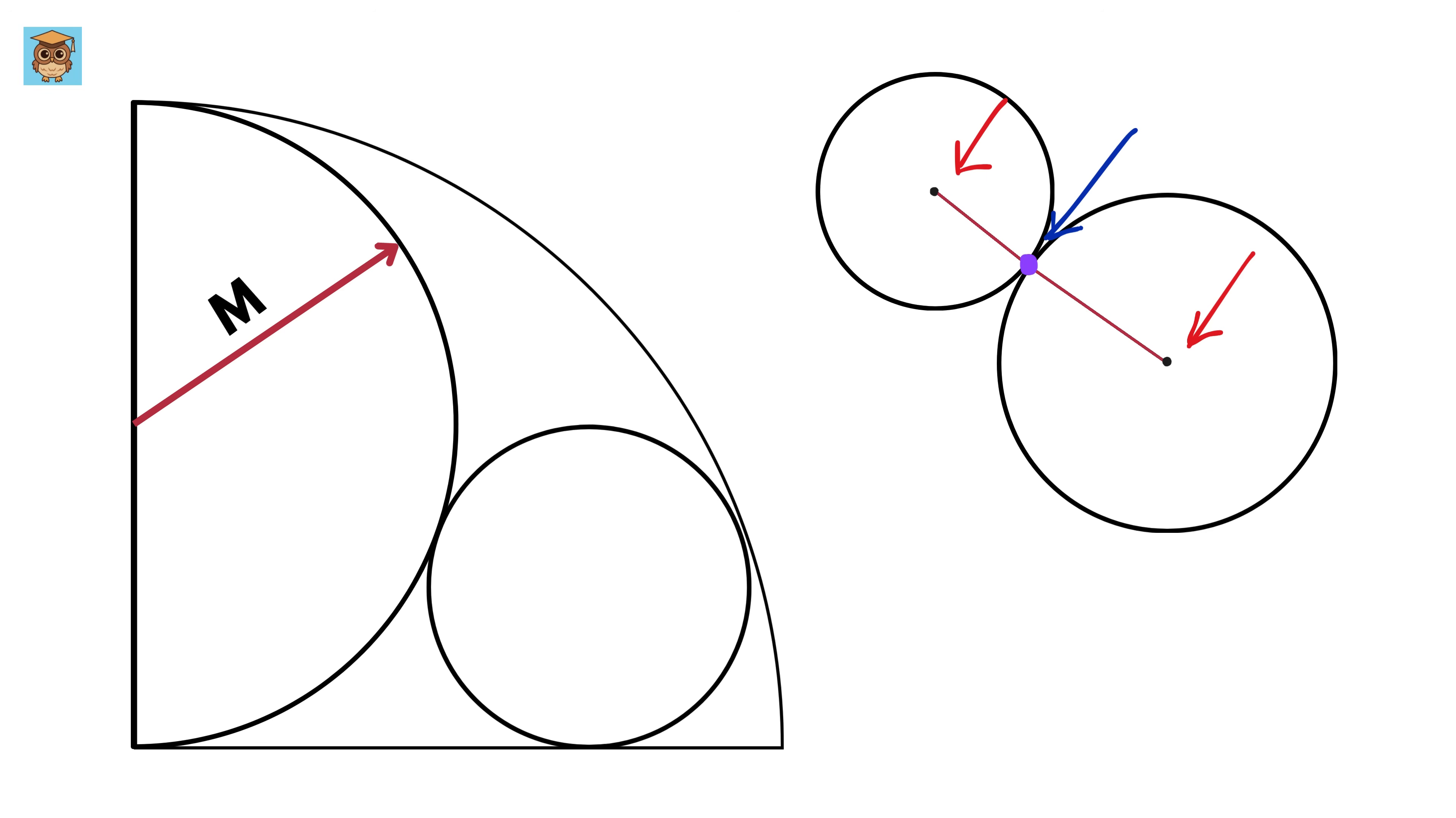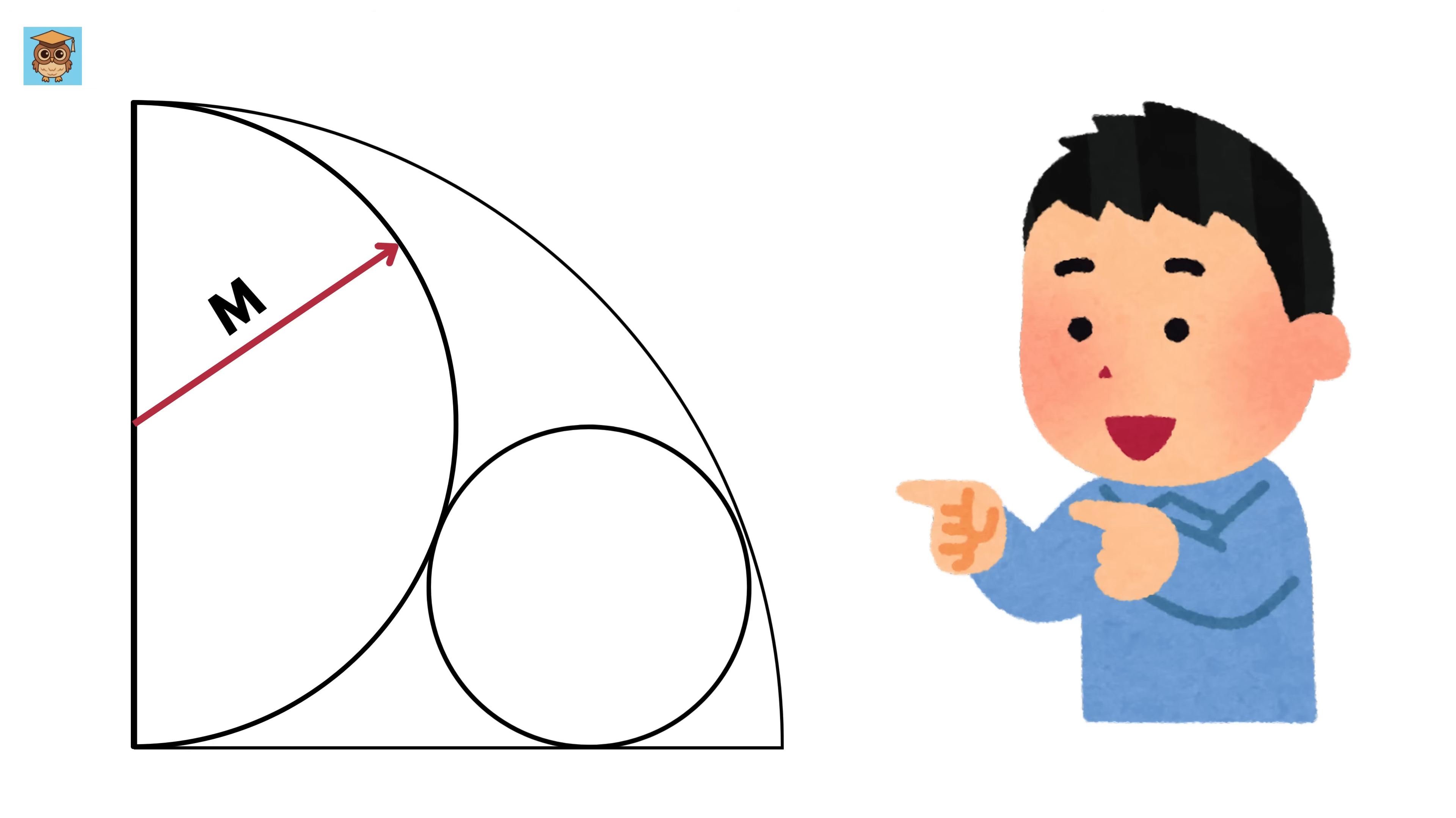Using the similar argument we can show that if we have two circles which are touching each other internally like this with this as the common point, and if we draw a line which connects the center of both of these circles, then it will also pass through this common point. This concept will help us solve the entire problem.